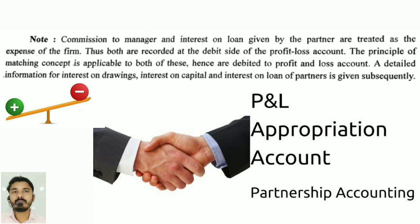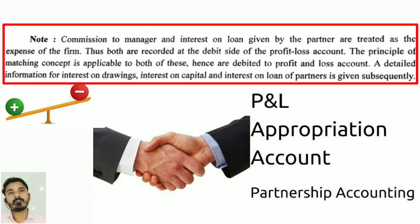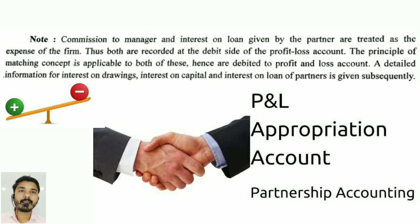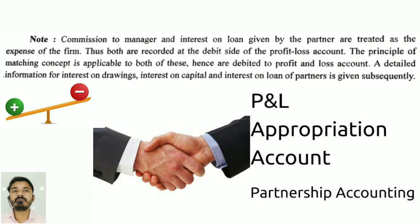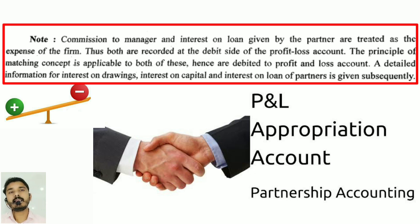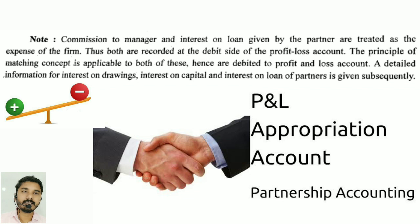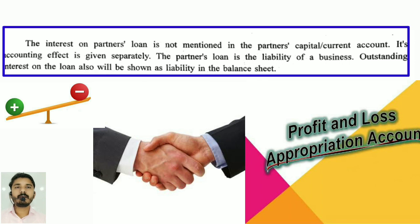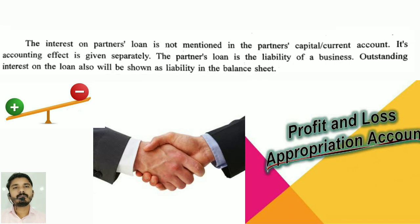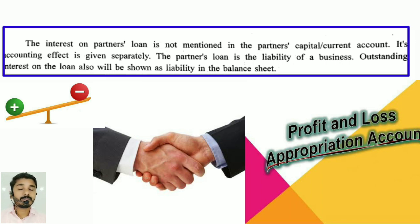Note: Commission to manager and interest on loan given by the partner are treated as expenses of the firm. Thus, both are recorded at the debit side of the Profit and Loss Account, as the matching concept is applicable. Interest on partner's loan is not mentioned in the partner's capital or current account — its effect is given separately. The partner's loan is a liability of the business, and outstanding interest on the loans will also be shown as a liability in the balance sheet.